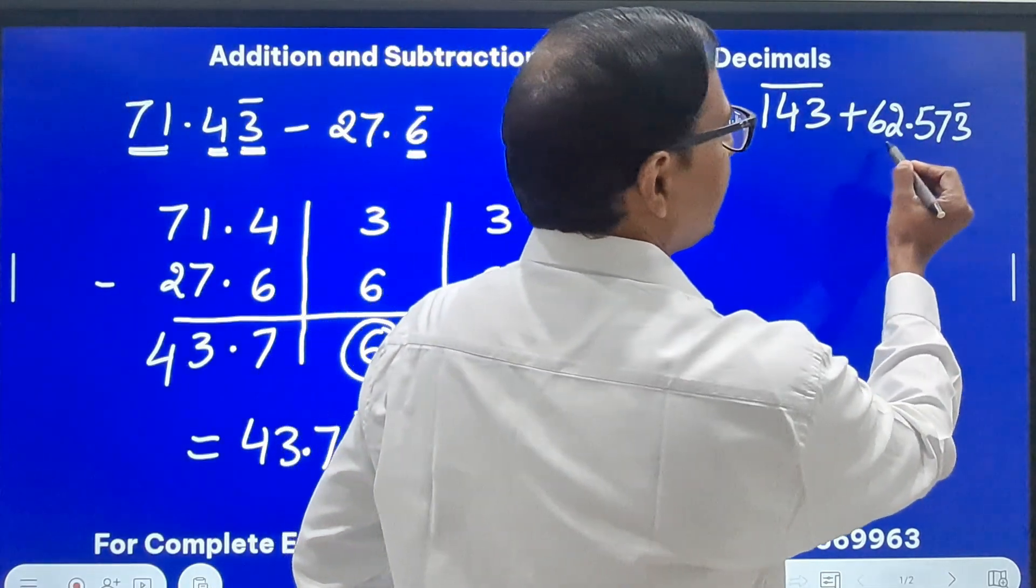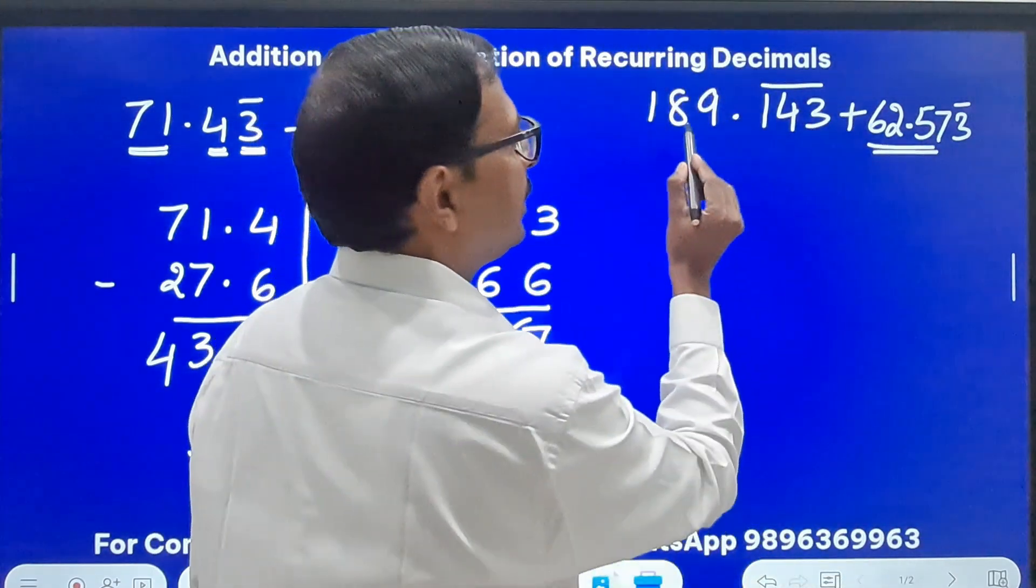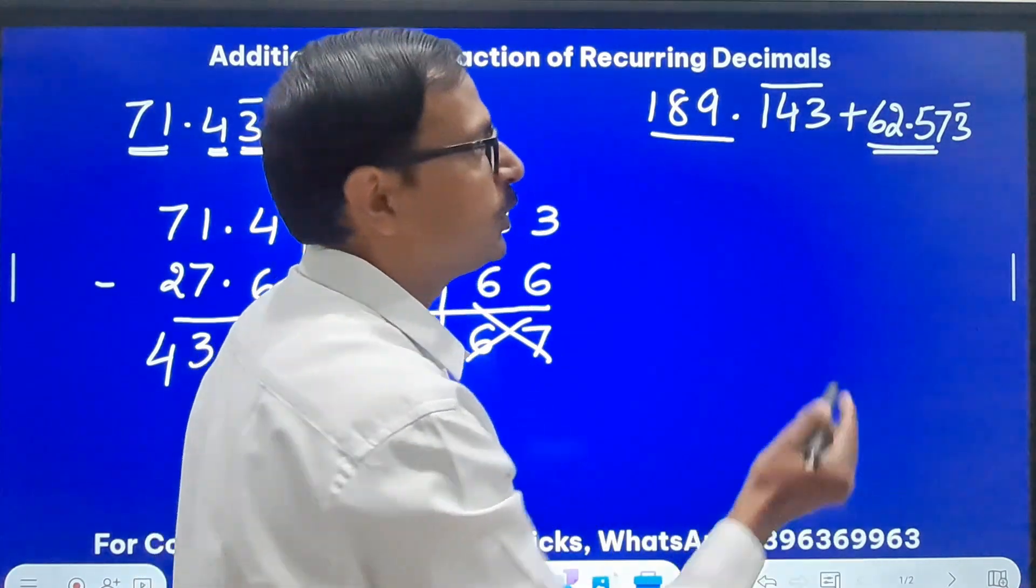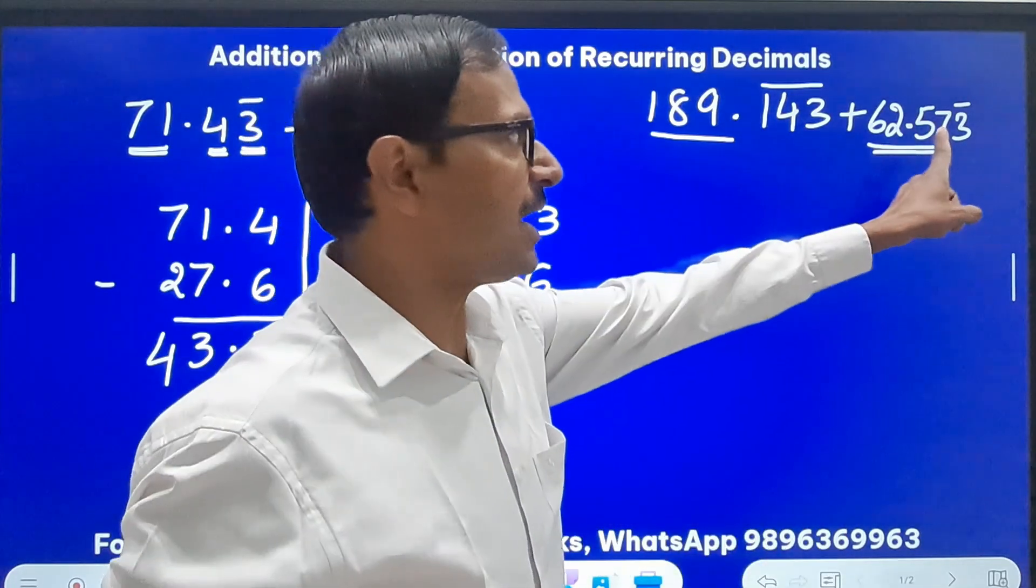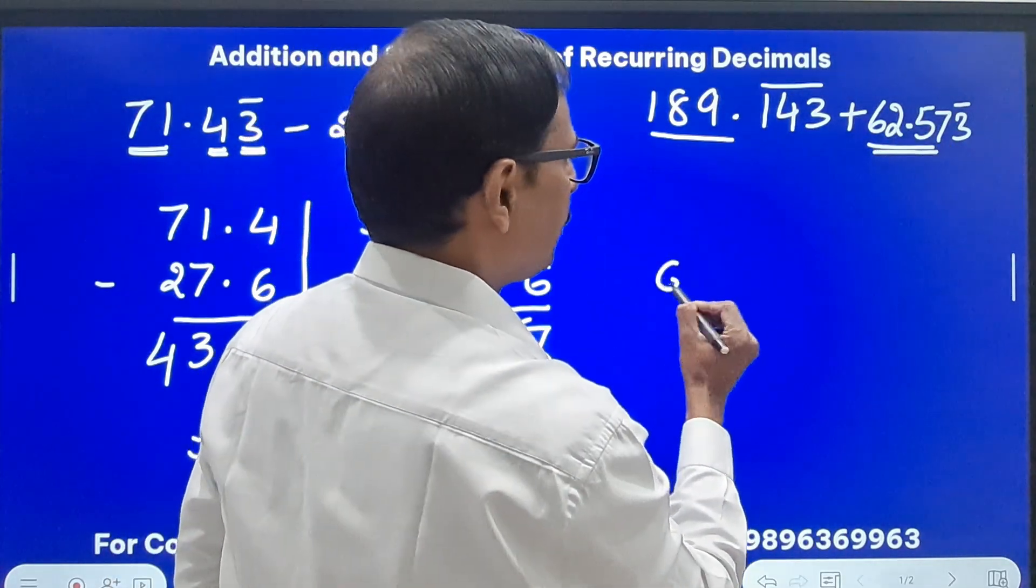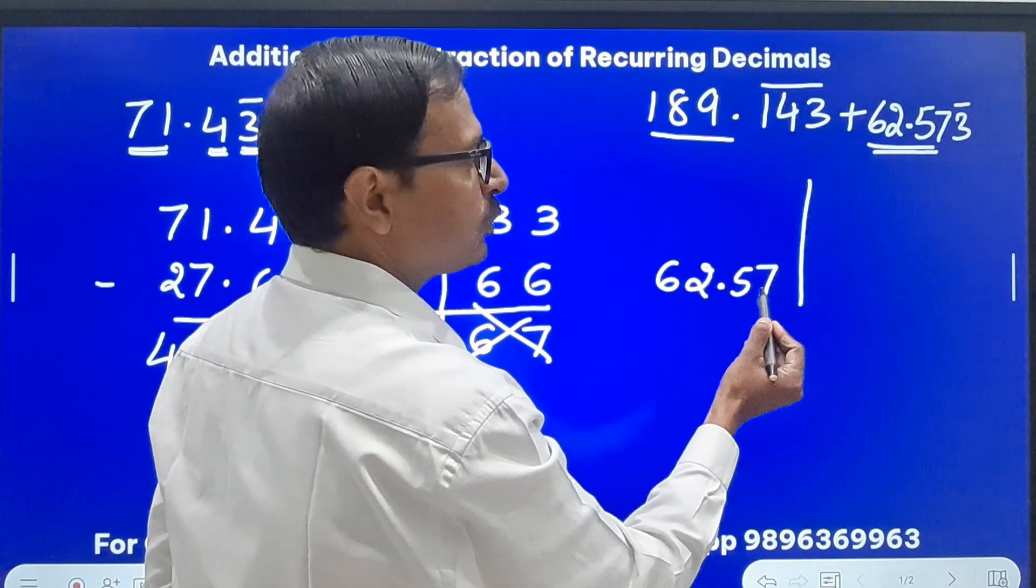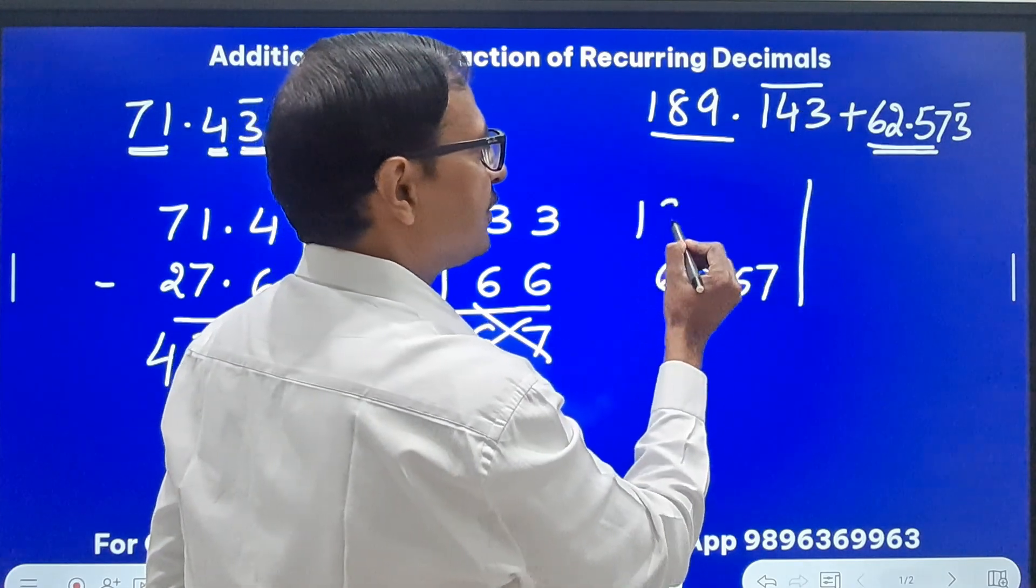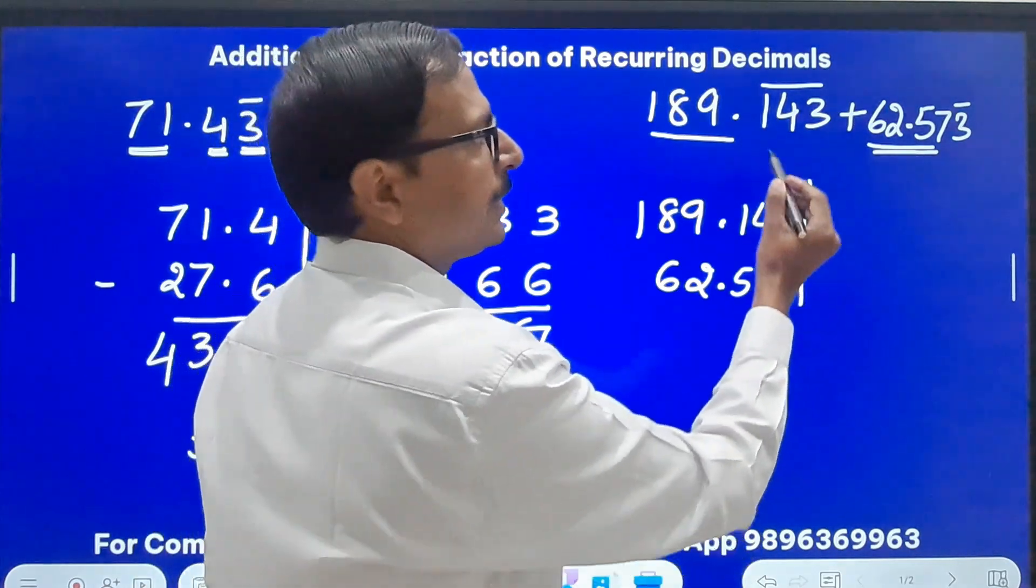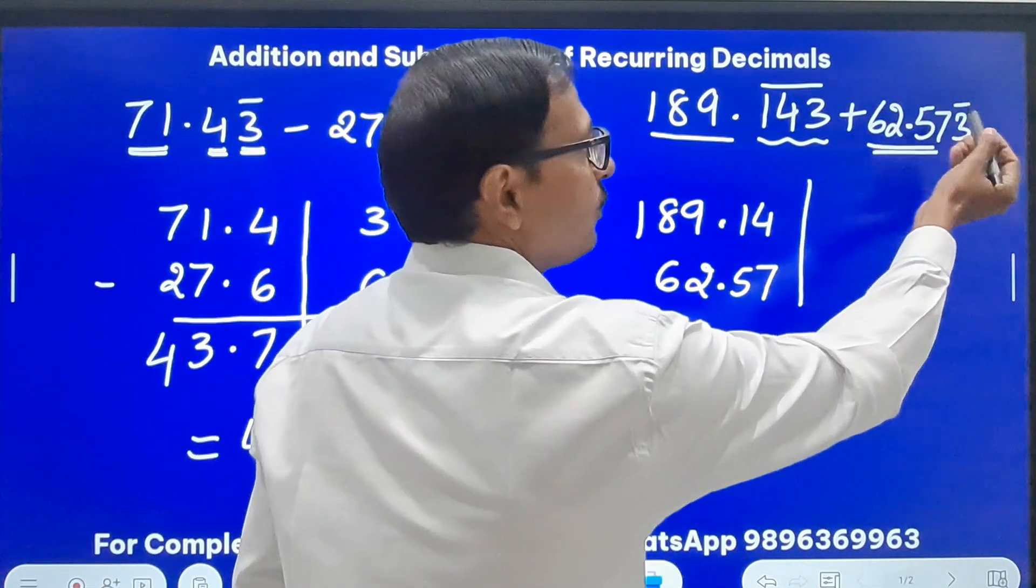So watch out the question now. In this number you can see that we have 62.57, two digits which are not repeating. Here there is nothing after decimal which is not repeating. So the higher number of non-repeating digits are in this number, so I will write 62.57 on the left hand side. And here also I have to take two digits, so this becomes 189.14.